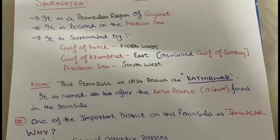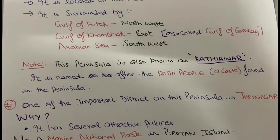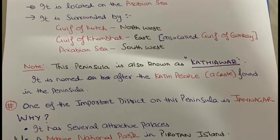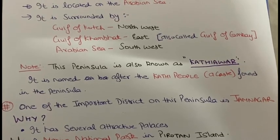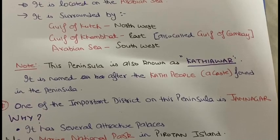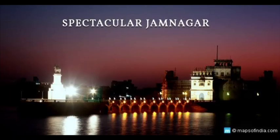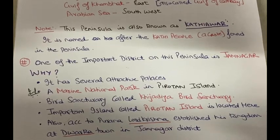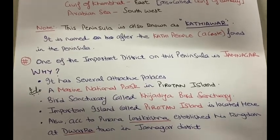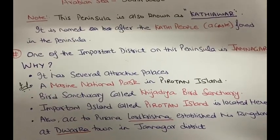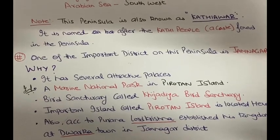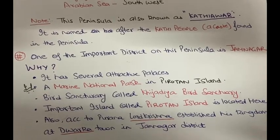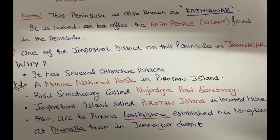In Saurashtra, there is an important district known as Jamnagar — it is the 5th largest district of Gujarat. Other districts include Surat, Rajkot, Ahmedabad, etc. Jamnagar is important because it has several attractive palaces, a Marine National Park (categorized in 1972), and it is very near to Pirotan Island, which is one of the important islands in Gujarat.